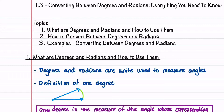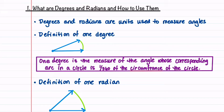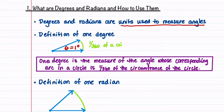Let's begin by reviewing the definition of a degree and a radian. Degrees and radians are units used to measure angles. Here's how we define a degree: in this triangle we're going to label our angle theta as one degree, and then we'll label the arc that corresponds to it as 1 over 360 of a circle. So 1 degree is the measure of the angle whose corresponding arc in a circle is 1 over 360 of the circumference of the circle.